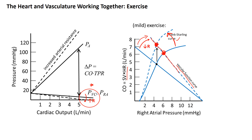This example represents a mild increase — mild exercise — because we're only recruiting something like a 50% increase in output, perhaps equivalent to taking a walk. You might play around with these curves to think about how they might look in vigorous exercise: how much does resistance change and how much does the Frank-Starling curve change to recruit a several-fold increase in cardiac output.